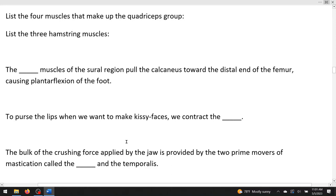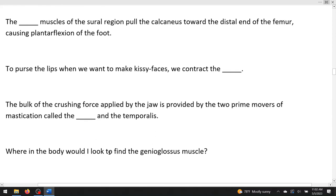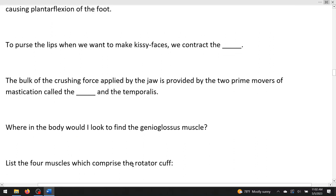To purse the lips, when we want to make kissy faces, we contract the, primarily, again you're going to do more than one, but primarily you contract the orbicularis oris, the ring of muscle that is around the mouth. The bulk of the crushing force applied by the jaw is provided by the two prime movers of mastication, chewing, called the blank and the temporalis. So the other major chewing muscle is masseter. Where in the body would I look to find the genioglossus muscle? Genio refers to the chin, glossus referring to the tongue. So look for a muscle that's attaching the chin to the tongue. That allows you to stick your tongue out like a little kid would. List the four muscles which comprise the rotator cuff. To do the rotator cuff group, you need to know sits, S-I-T-S, but it's a little t. So that would be supraspinatus, infraspinatus, little t teres minor, and subscapularis.